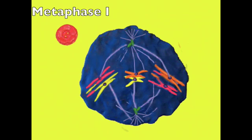In metaphase, the spindle fibers then pull the chromosomes to the equator and line the homologous pairs up side by side as tetrads.